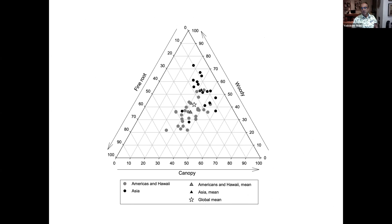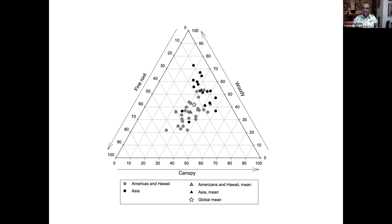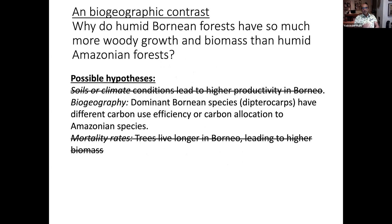Biomass is around 60 to 70% higher in Bornean forests than in Amazonian forests, largely driven by higher woody production rates, with turnover rates and residence times being very similar. A ternary diagram shows the partition of biomass production between fine roots, canopy, and wood. Sites in the Americas have fairly equal partitioning, whereas sites in Borneo have much less allocation to roots and much more allocation to wood. It's the lack of investment in roots that enables greater investment in wood. This may be linked to the fact that dipterocarps are ectomycorrhizal trees with a very different carbon allocation strategy than the arbuscular mycorrhizal forests that dominate Amazonia. So mycorrhizal strategies may be shaping the biomass, productivity, and biogeographical patterns. It seems that biogeography and allocation strategies shape the difference in biomass and growth rates between Borneo and Amazonia.